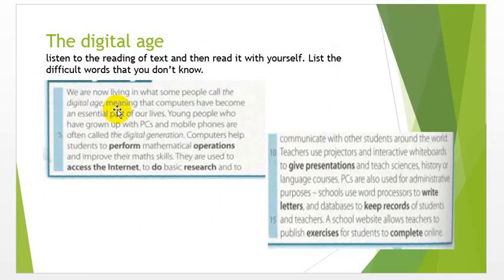Here we have a text passage which I would like to read for you and you should listen. If it is not visible or not clear and you cannot see it, then go to your book and see passage 1, text 1. The title of this passage is The Digital Age. Listen to the reading of the text and then read it yourself. List the difficult words that you don't know.